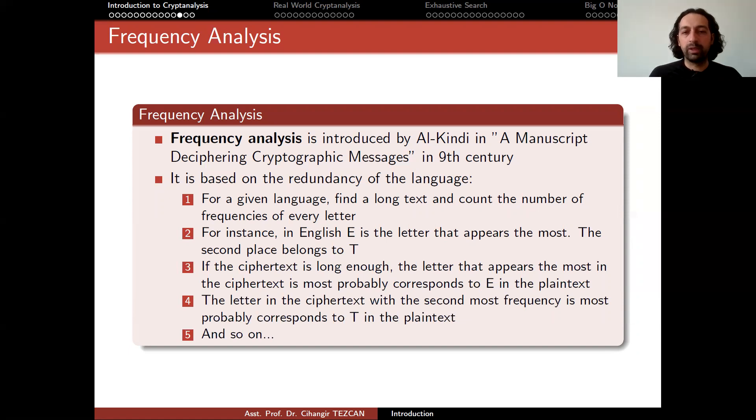Actually, this is the first homework I give to my applied cryptology course students. I give them a ciphertext both in Turkish and English and ask them to obtain the plaintext. And they repeat these steps and they obtain the plaintext. This is very easy. And actually, this is a very important practice because as you can see, there is some statistical property we are exploiting here.